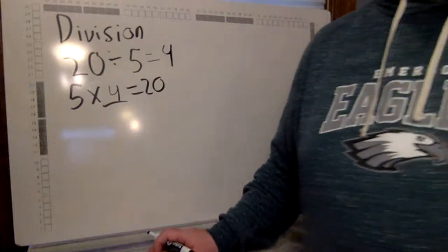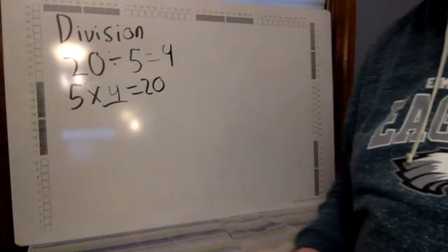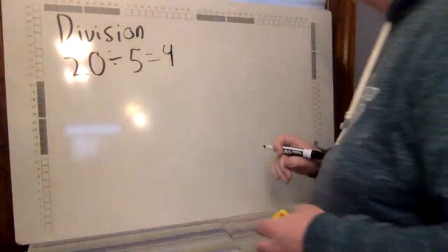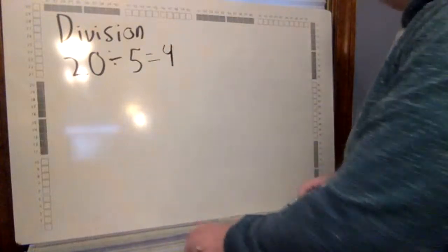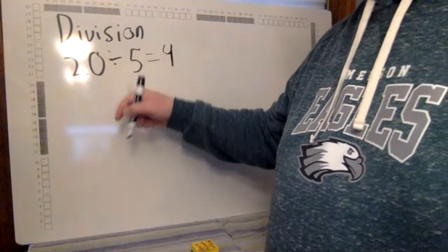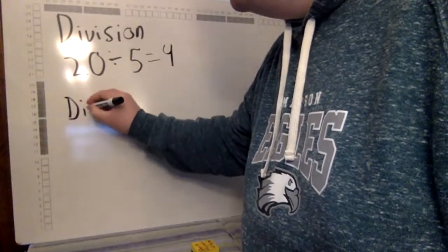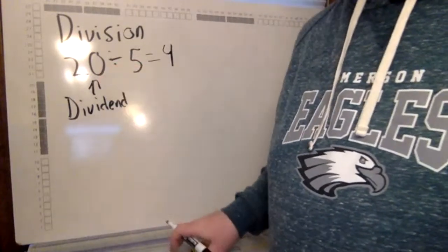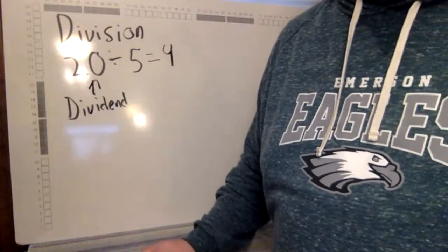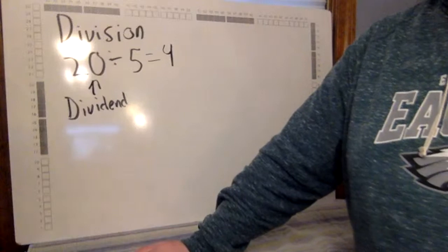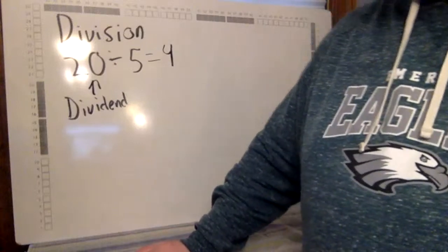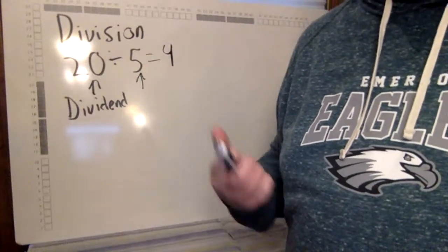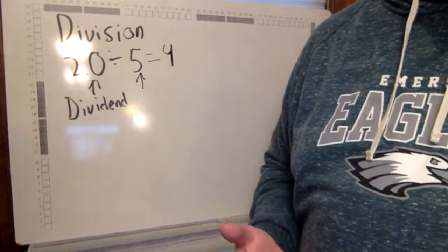The next thing I want to tell you about are the different parts of a division problem. Division problems have three main parts. The big number that gets divided is called the dividend. In fourth grade math, this is typically going to be the biggest number in a division problem — it's the number that gets divided.